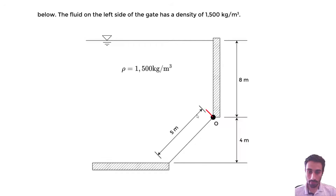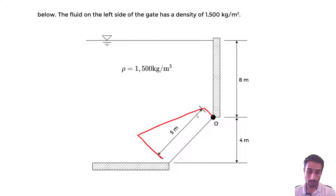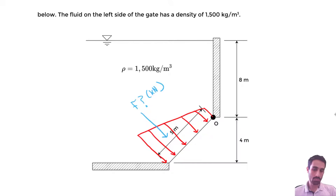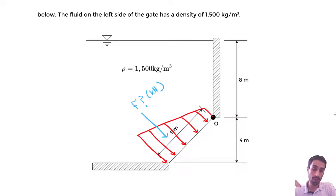Let's draw this pressure distribution. Pressure is always perpendicular to the surface we're looking at — in this case, the gate. From this pressure distribution we want to find a resultant force FR acting somewhere along the gate. Using two basic shapes is the more complicated approach for slanted gates, so I recommend using the equations in the handbook under fluid mechanics, under forces on submerged surfaces and center of pressure.